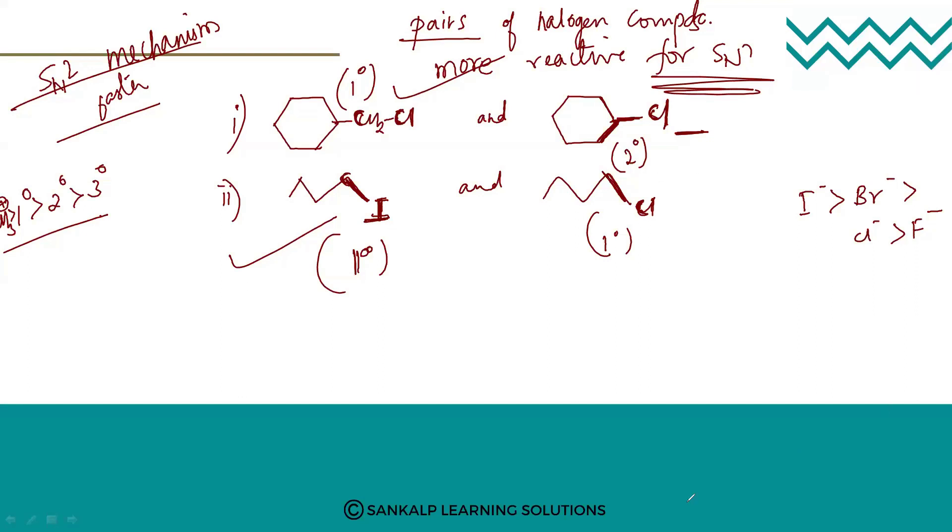Next we are going to study the stereochemical aspect, which we will take up in the next class. Some important terms will be covered, followed by more chemical reactions of haloalkanes, then haloarines, and then polyhalogen compounds.